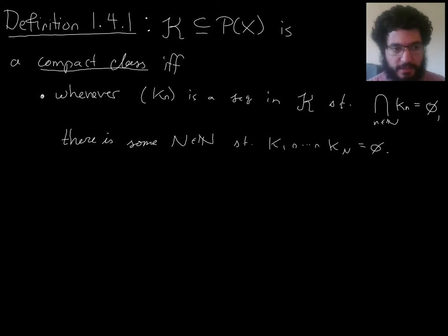So we start with this definition here, definition 1.4.1, of a compact class. If you have a set, fancy k, of subsets of x, then we call that collection of subsets of x a compact class if and only if it has this property: